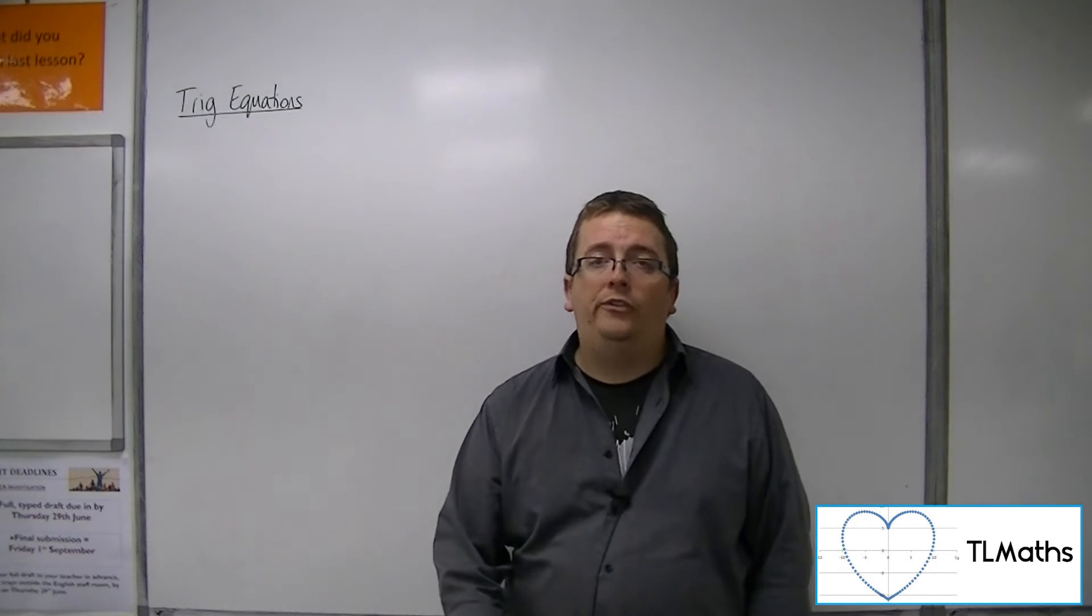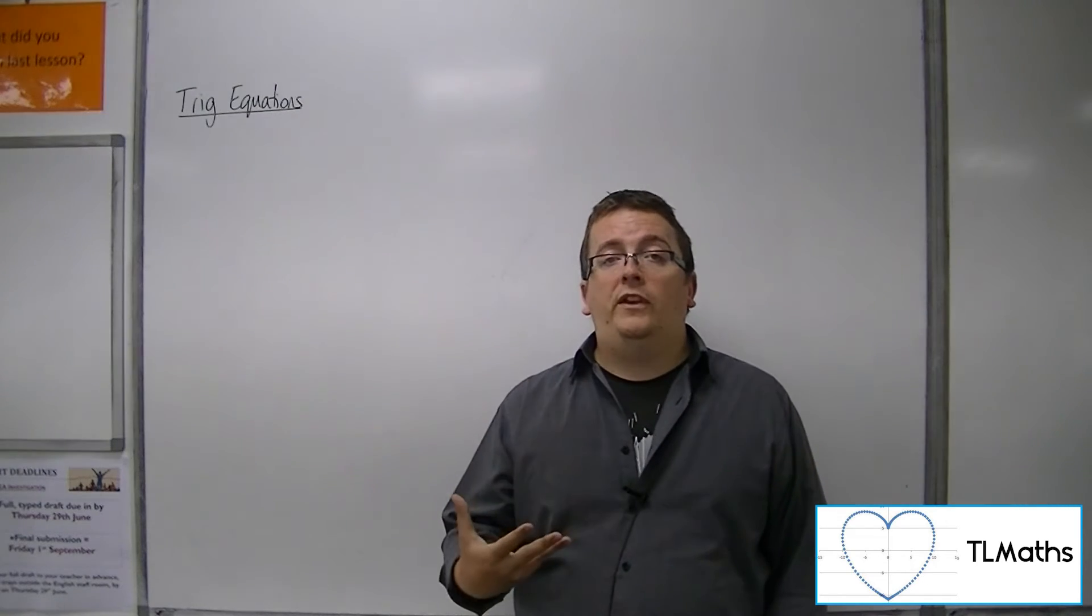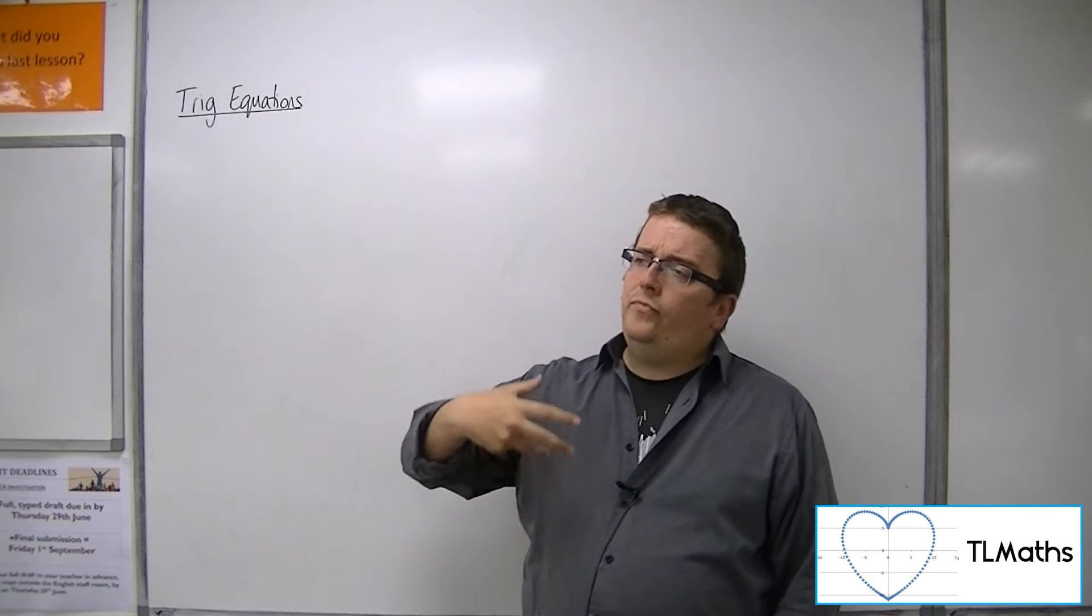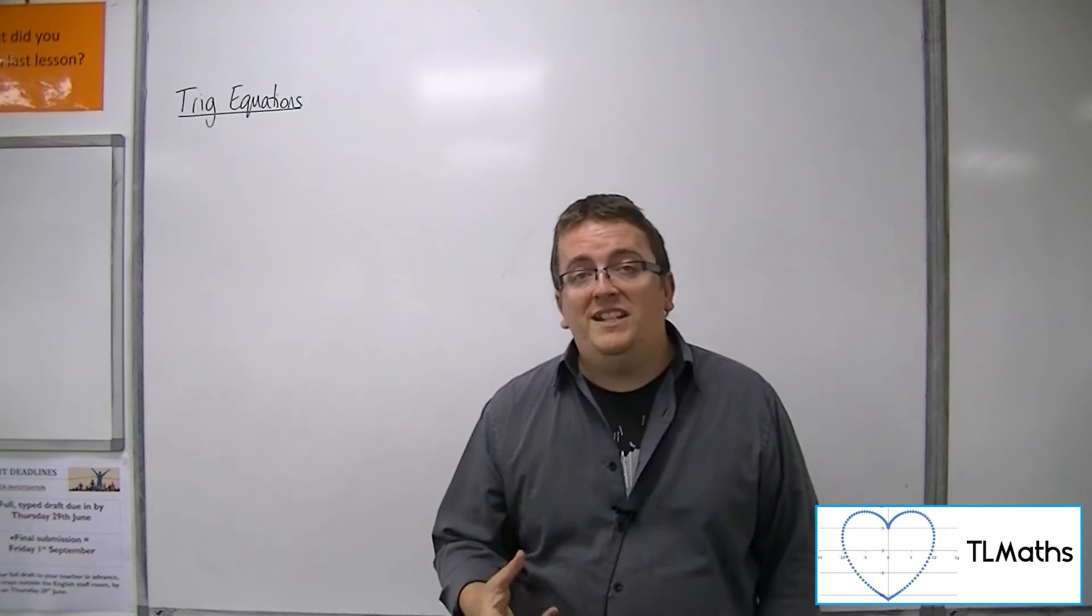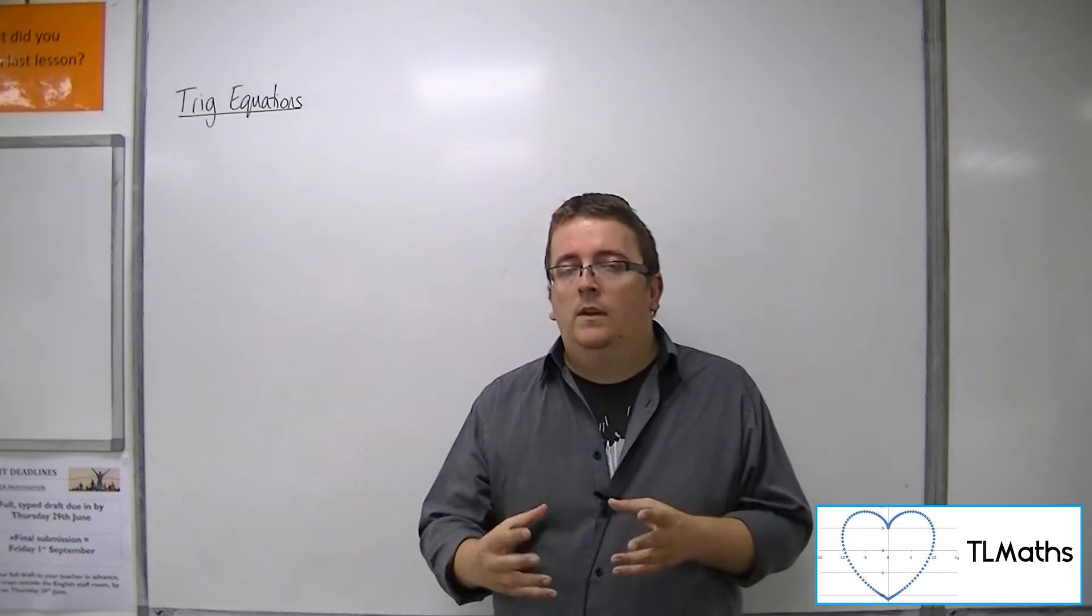Sine and cosine by themselves naturally have a period of 360 degrees or 2 pi radians. And tan has a period of 180 degrees or pi radians. You need that embedded.